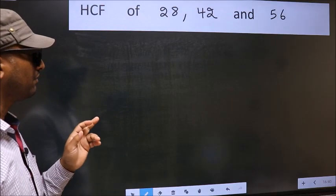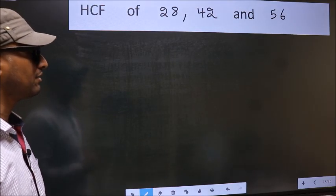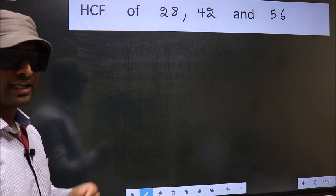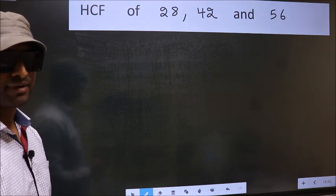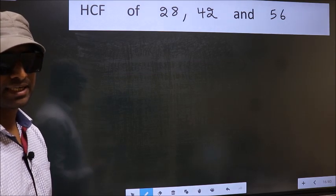HCF of 28, 42 and 56. To find the HCF, we should do the prime factorization of each number separately.